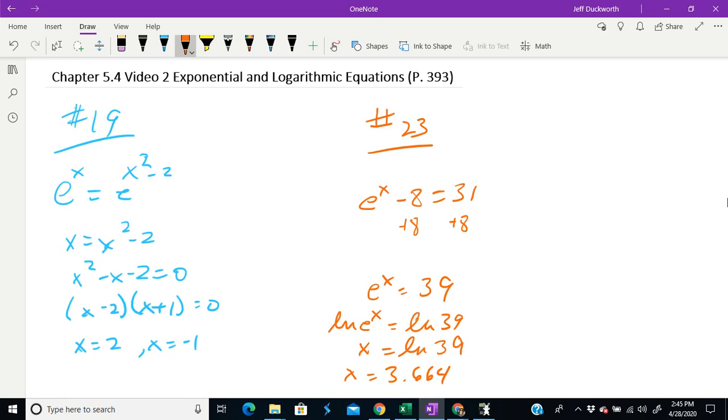So let's do just another quick example here. Say we had 3 to the x minus 1 equals 27. This is going to work a lot like one we had on the previous one. 27 is actually 3 cubed, so we have 3 to the x minus 1 equals 3 cubed. In a similar fashion to 19, that means x minus 1 equals 3, and x equals 4.